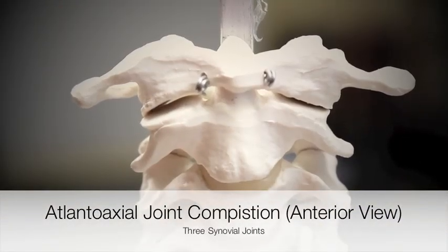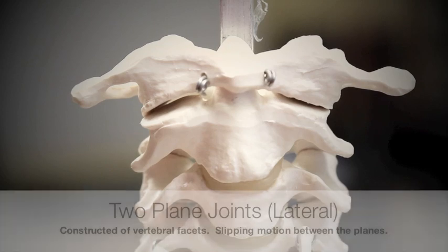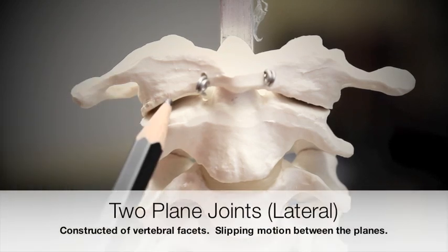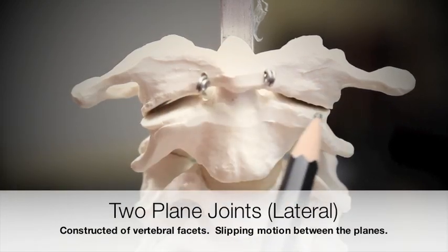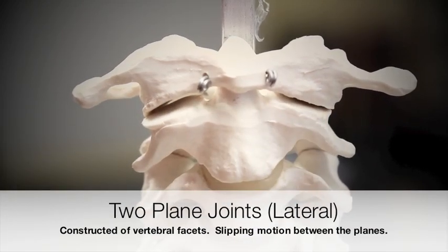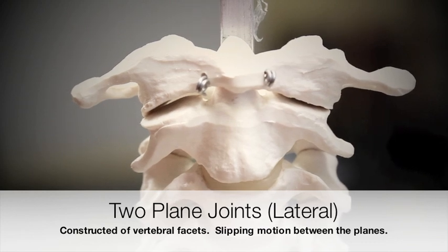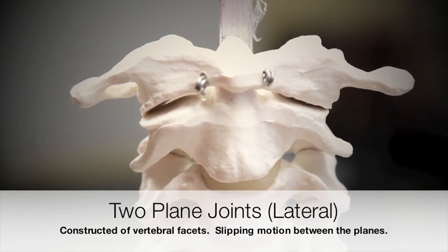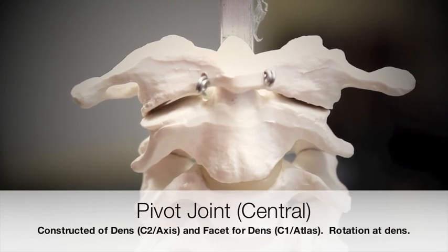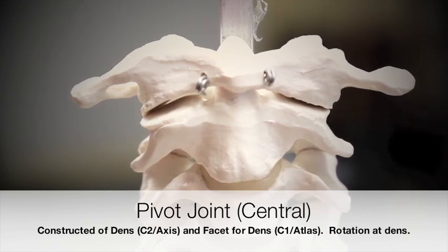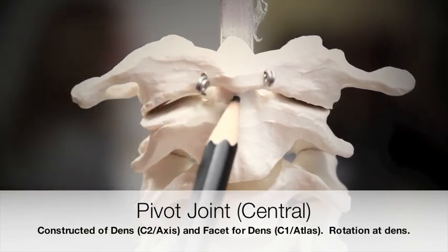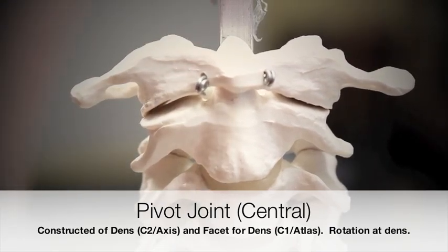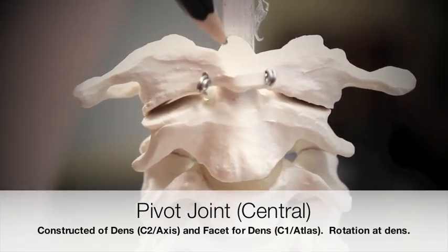The atlantoaxial joint is comprised of three synovial joints. This is the anterior view showing two plane joints located on either side of the vertebrae at the facets, providing a slipping motion, and the pivot joint.